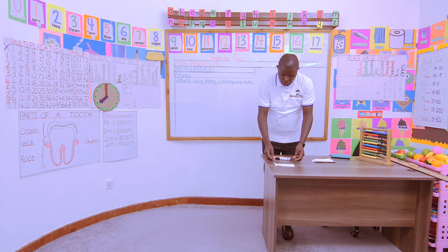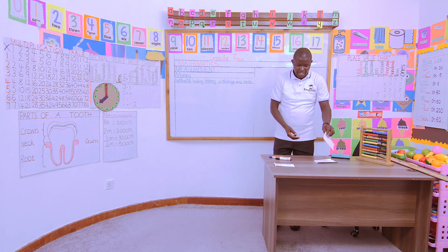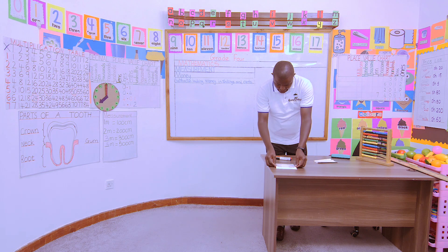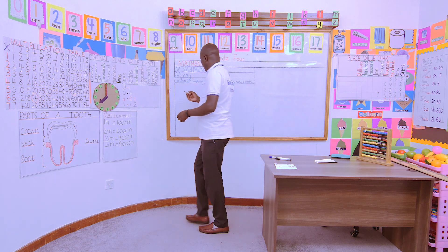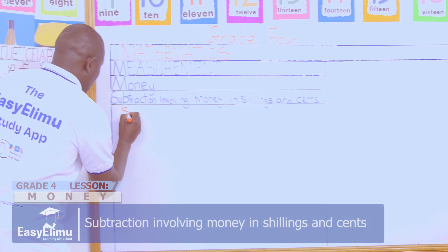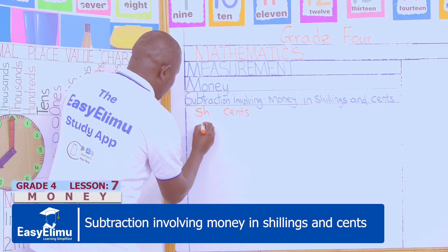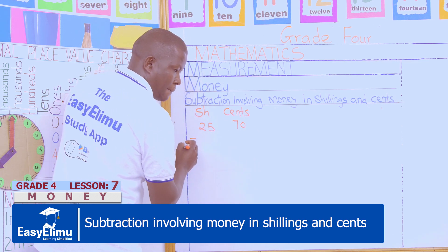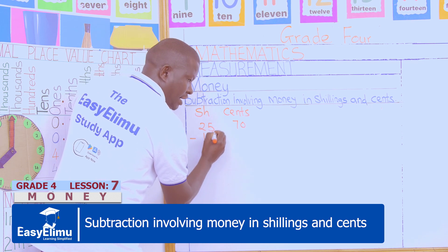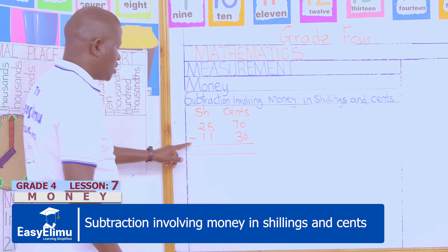The first number card is 25 shillings and 70 cents. We are subtracting, so we are taking away 11 shillings and 30 cents. Let me write that: shillings and cents — 25 shillings and 70 cents, take away 11 shillings and 30 cents. This is the sign of taking away.